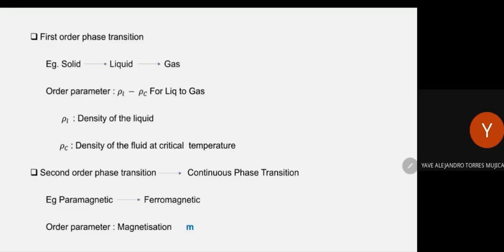One example of the order parameter for a first order liquid-to-gas transition is rho_L minus rho_C, where rho_L is the density of the liquid and rho_C is the density of the fluid at the critical temperature. You need to know the critical temperature to properly define the order parameter, which makes things complicated. In a magnetic phase transition, the magnetization is simply the order parameter — it is one in the ferromagnetic state and zero in the paramagnetic state.